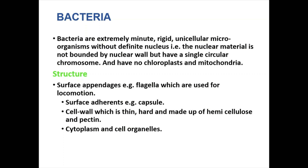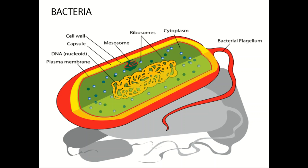The structure of bacteria: the surface appendages like flagella can be seen, which are used by the bacteria for locomotion. Surface adherents like capsules and the cell wall, which is thin, hard, and made up of hemicellulose and pectin. In the structure diagram we can see the cytoplasm has ribosomes and mesosomes, which are surrounded by a cell wall and capsule.